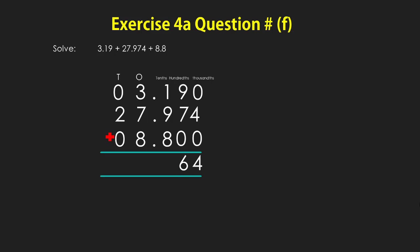9 plus 7 gives 16, so we put 6 in the hundredths column and carry 1 to the tenths column. 1 plus 1 plus 9 plus 8 gives 19, so we put 9 in the tenths column and carry 1 to the ones column. Now we write the decimal point where it is. 1 plus 3 plus 7 plus 8 gives 19, so we put 9 in the ones column and carry 1. 1 plus 0 plus 2 plus 0 gives 3 in the tens column. So our sum is 39.964.